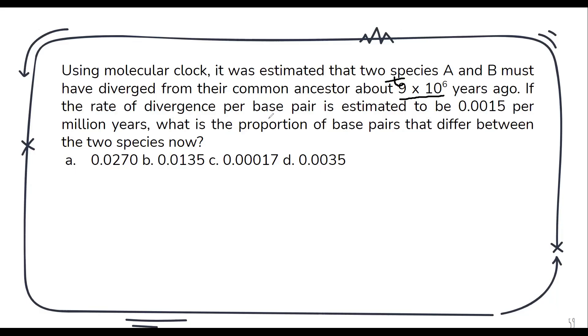If the rate of divergence per base pair is estimated to be 0.0015 per million years. It is the rate meaning it is r. Now what is the proportion of base pairs that differ between the two species? Proportion of base pairs that we had represented by d.